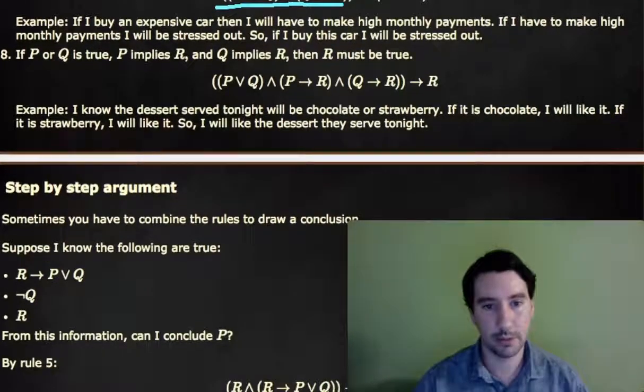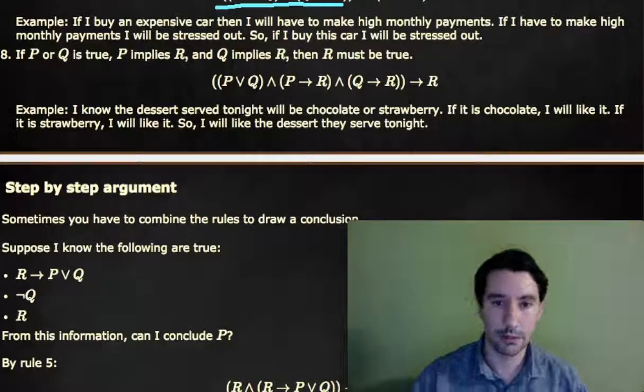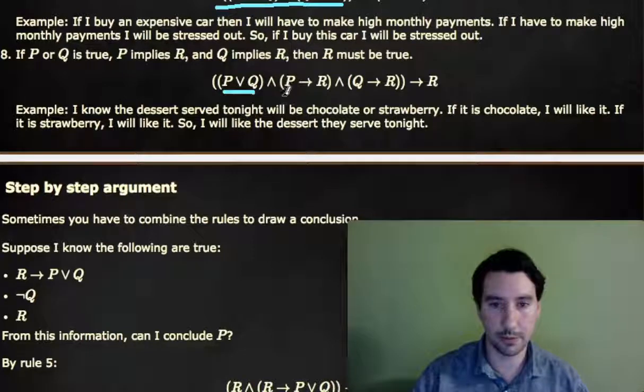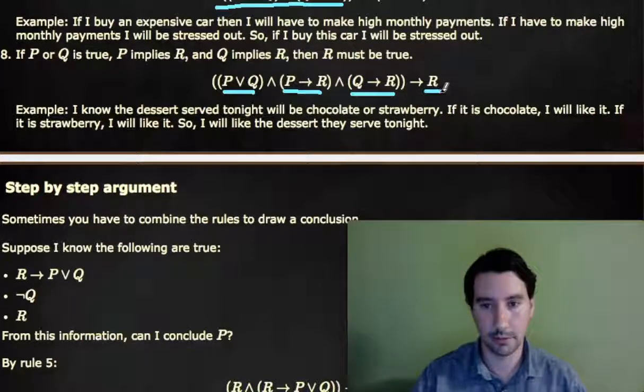If P or Q is true, and P implies R, and Q implies R, then R must be true. That is, if I know at least one of P or Q is true, and P would imply R, and Q would also imply R, then R's got to be true somehow.